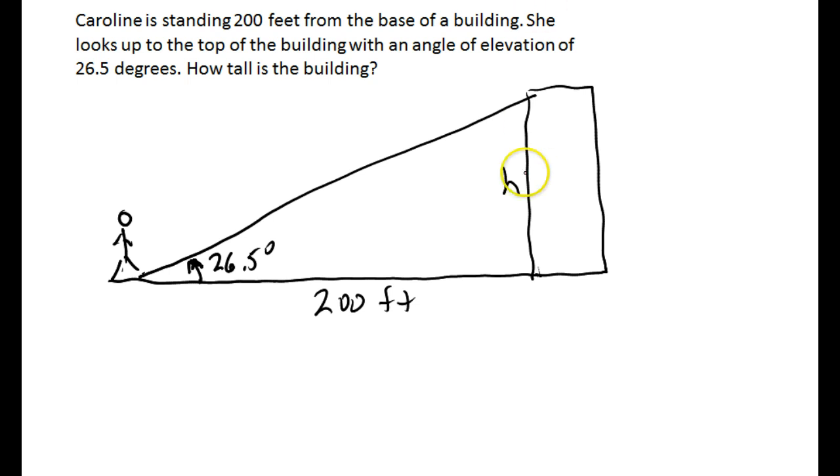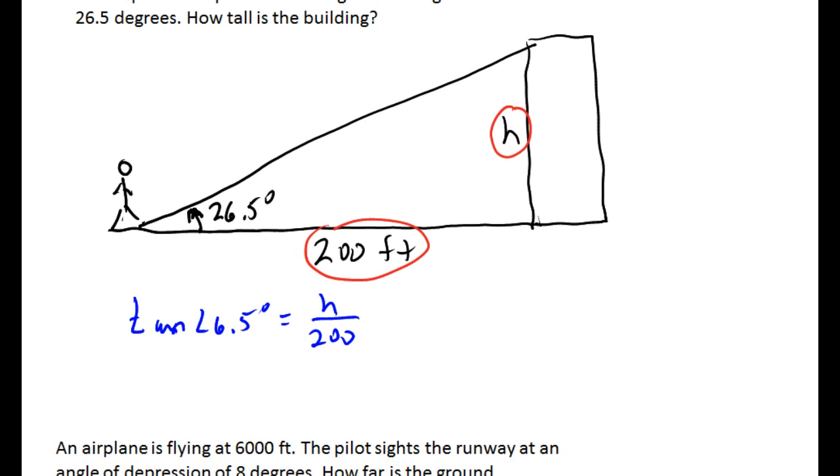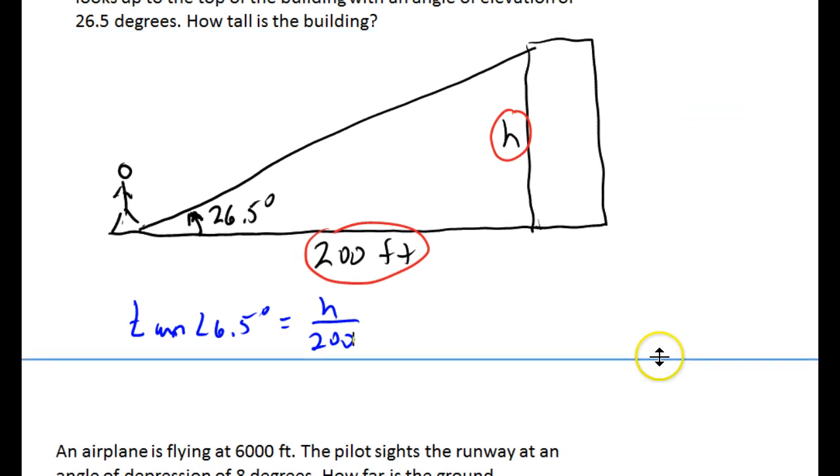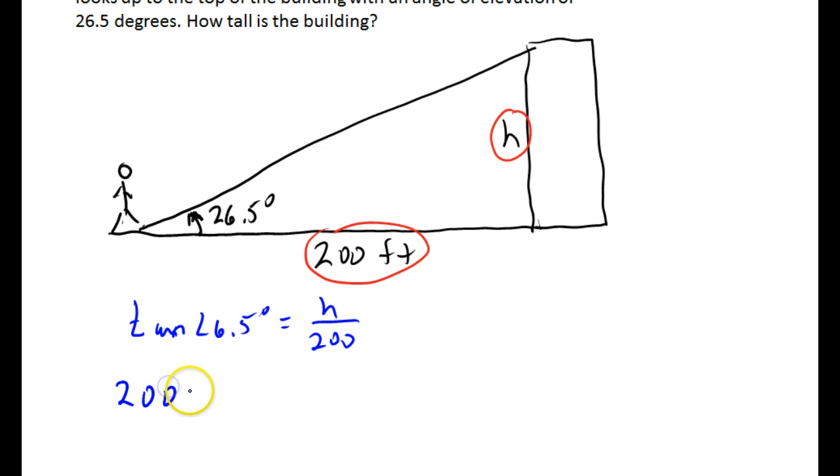That's the opposite side. That's the adjacent side. Sounds like we want to use tangent. The tangent of 26.5 degrees is going to be h over 200. So multiplying by 200 will give me h.